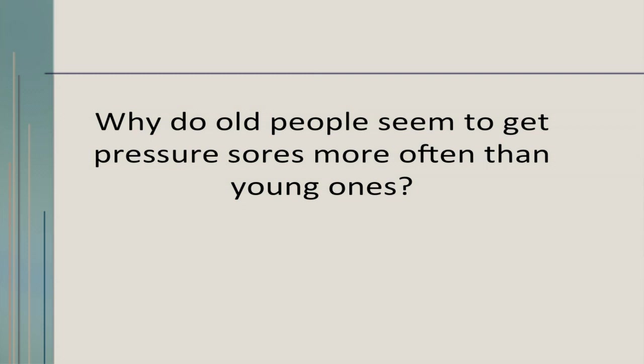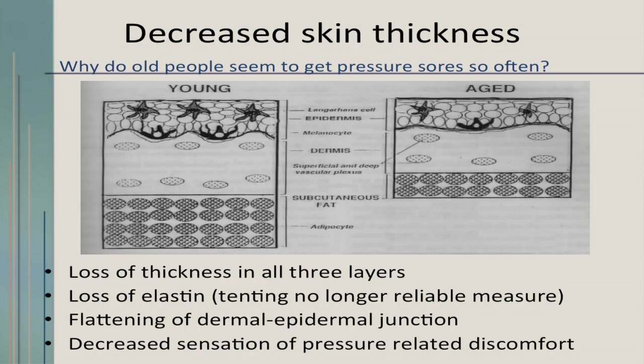Older patients seem to get more pressure sores than younger ones. As we age, our skin becomes less thick — almost half as thick — and we lose thickness in all three of our skin layers. We lose elastin, there's flattening of the dermal-epidermal junction, and there's decreased sensation of pressure-related comfort. Also, older people are less able to convert vitamin D from the sun into a usable form due to aging changes in the skin.